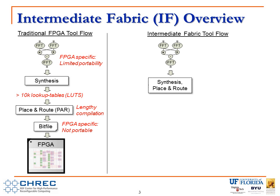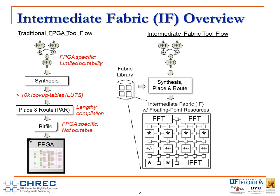Now let's compare this to the intermediate fabric tool flow. Again we start with the same circuit and pass it through synthesis and placement and routing, but the difference is that instead of directly targeting the FPGA, we choose some appropriate virtual fabric that corresponds to the level of granularity required by the circuit. We can choose from a library of fabrics, and now when we do synthesis and placement and routing, instead of decomposing the circuit into tens of thousands of lookup tables, we only have to place and route the several coarse-grained operations, which enables very fast compilation.